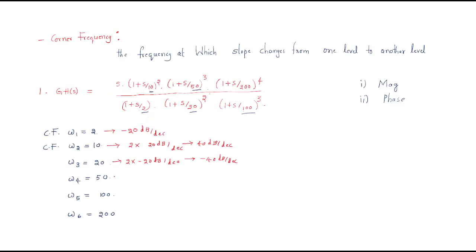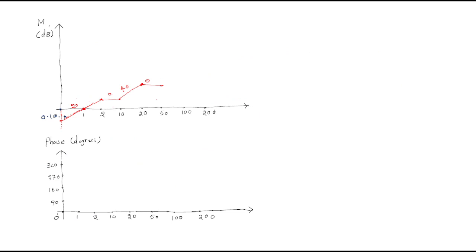At corner frequency 50, we have three poles, so 3 × 20 = 60 dB per decade is the slope change. The slope becomes minus 60 dB per decade, meaning it decreases, up to corner frequency 100.